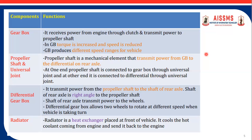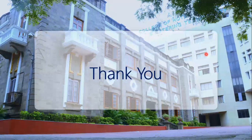The next component is the differential gearbox. It is present at a right angle to the rear axle and receives power from the propeller shaft to the rear axle. It allows two wheels to rotate at different speeds when the vehicle is taking a turn, making turning of the vehicle possible. The last important element is the radiator, also known as the heat exchanger, which is present at the front end of the vehicle. It cools the hot coolant coming from the engine and sends it back to the engine.